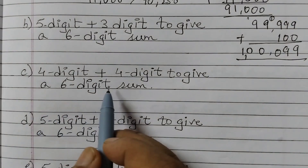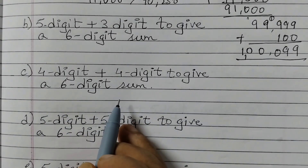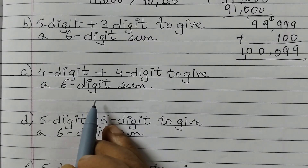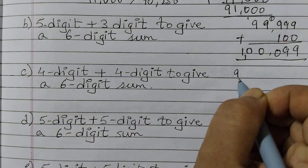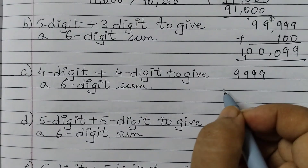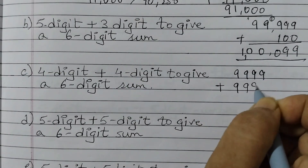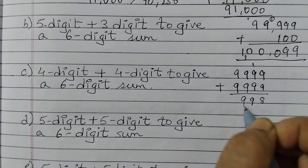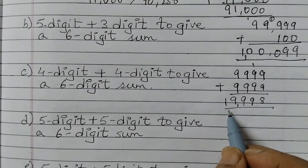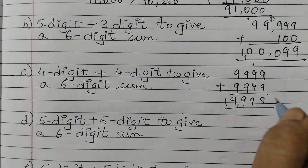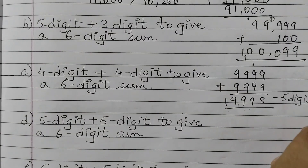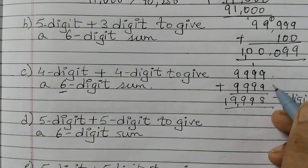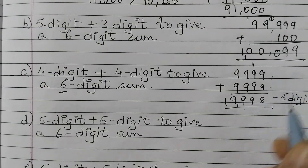Next: 4 digit plus 4 digit to give a 6 digit sum. We add two 4-digit numbers to get a 6-digit sum. Let's take the largest 4-digit numbers: 9,999 plus 9,999. When we add them we get 19,998 — and that's a 5-digit number. We want a 6-digit sum, but we're getting a 5-digit number even with the largest 4-digit numbers. So this is not possible.